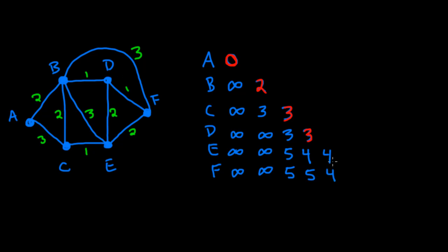We choose E with minimum label 4. E's only unfinished neighbor is F. The label of E is 4 plus the edge weight 2 gives 6, but 6 is not an improvement over 4, so F remains at 4. We take the last remaining vertex F and put it into the solution set. Reading down the list, the minimum weights of paths from A to each vertex are: A=0, B=2, C=3, D=3, E=4, F=4.